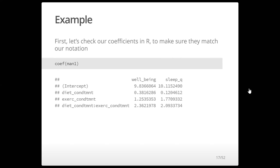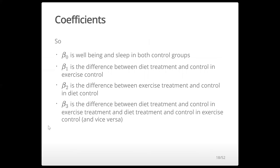The first coefficient is the diet condition treatment, the second is exercise condition treatment, and the last is the interaction between diet treatment and exercise treatment. So beta zero is well-being and sleep in both control groups. Beta one is the difference between diet treatment and control in the exercise control group. Beta two is the difference between exercise treatment and control in the diet control group. Beta three is the interaction term — it's the additional difference when you're in both treatment groups simultaneously. You have to add all four terms to get the treatment-treatment mean.